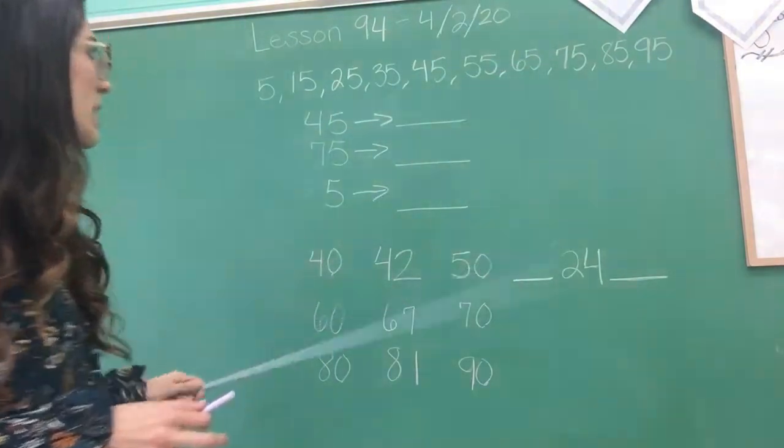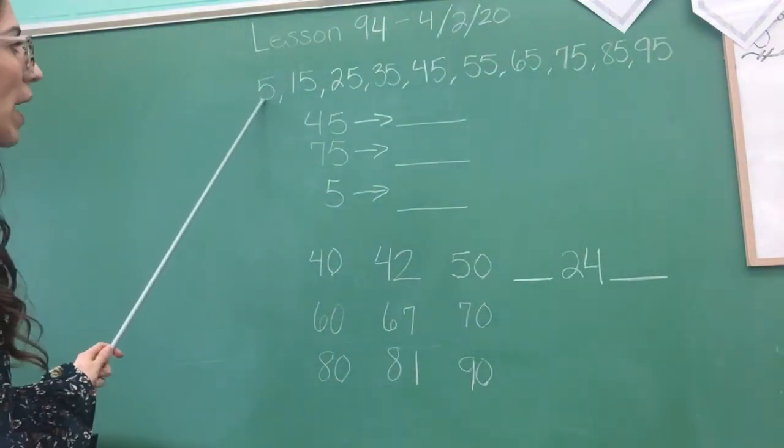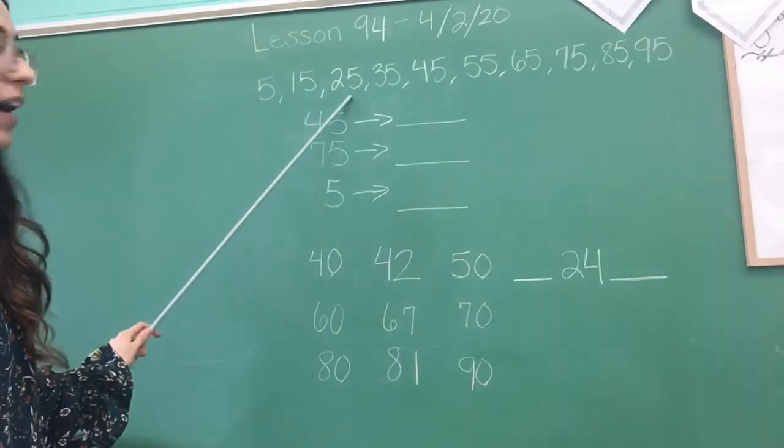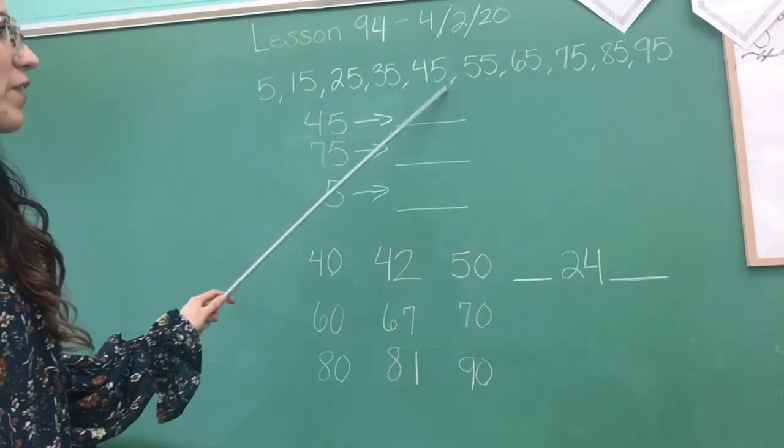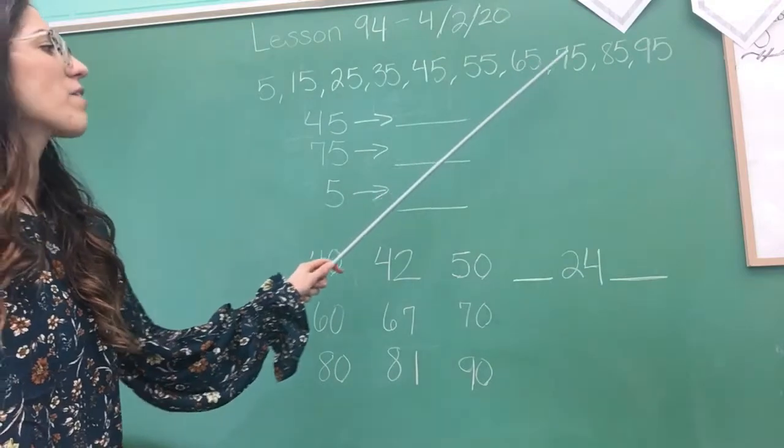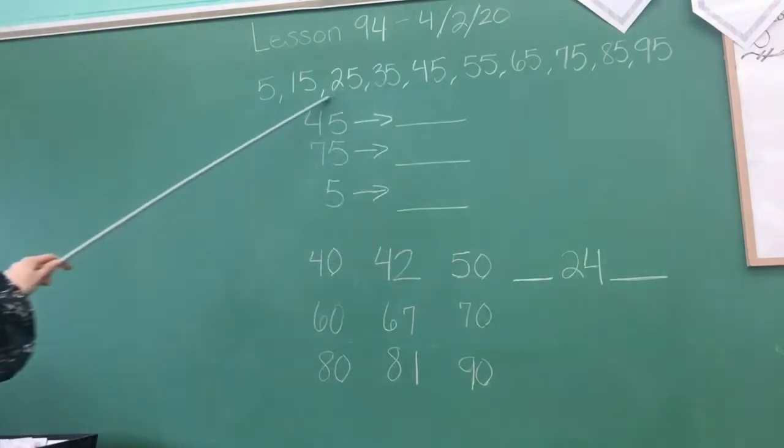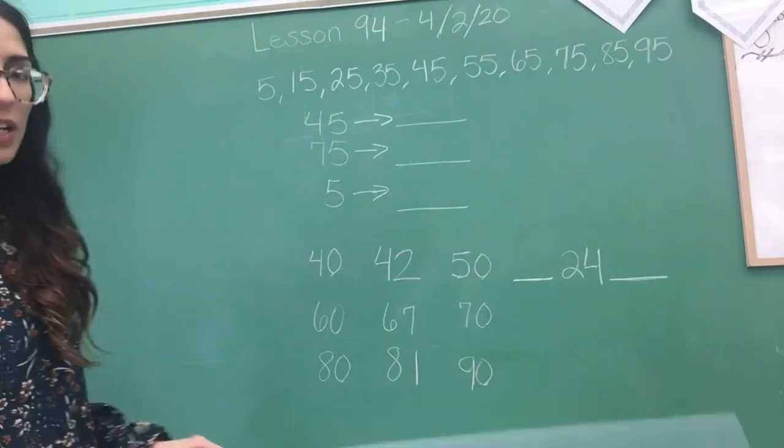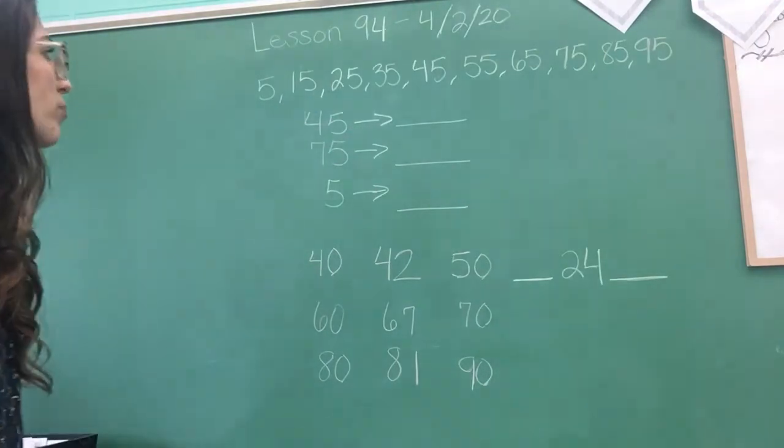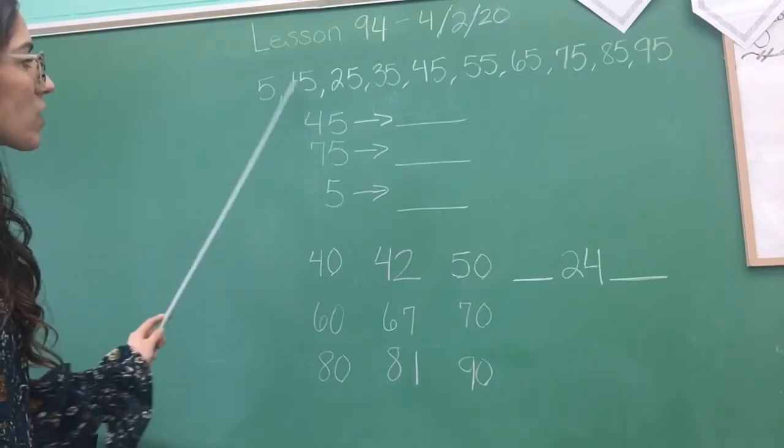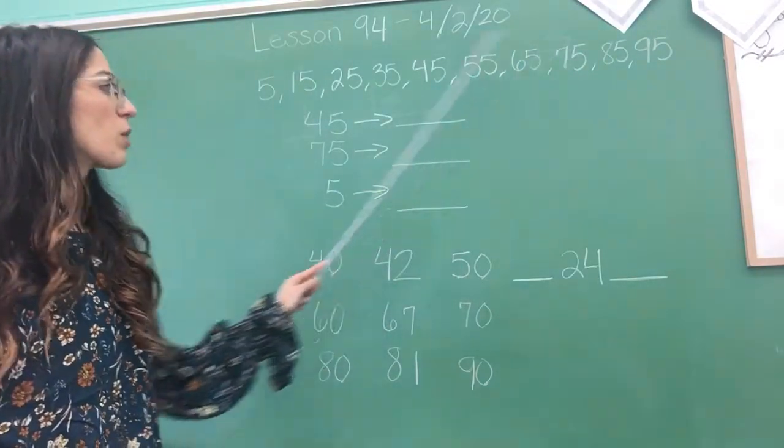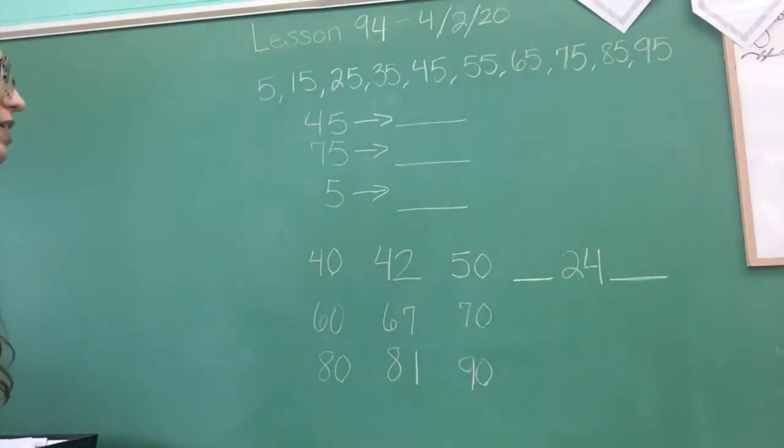So for example, we have 5, 15, 25, 35, 45, 55, 65, 75, 85, 95. These numbers are halfway between the tens. That is going to be important for you to know this when we round to the nearest ten.